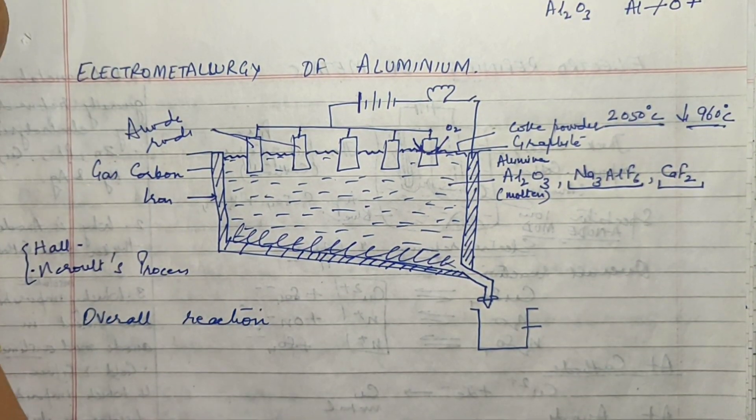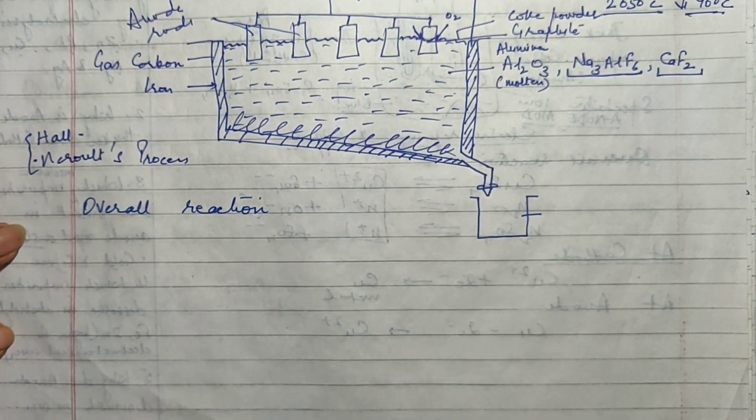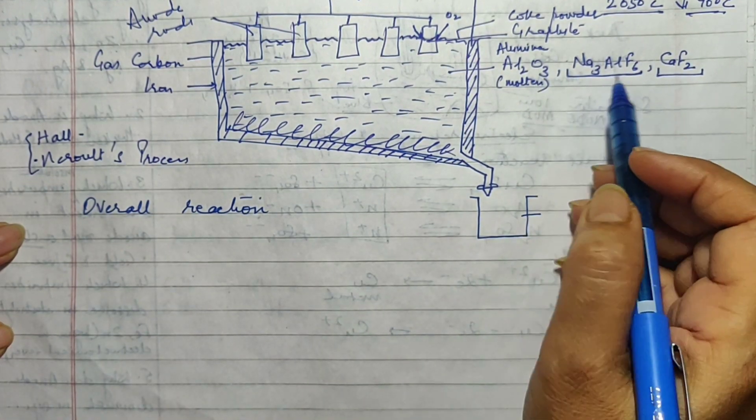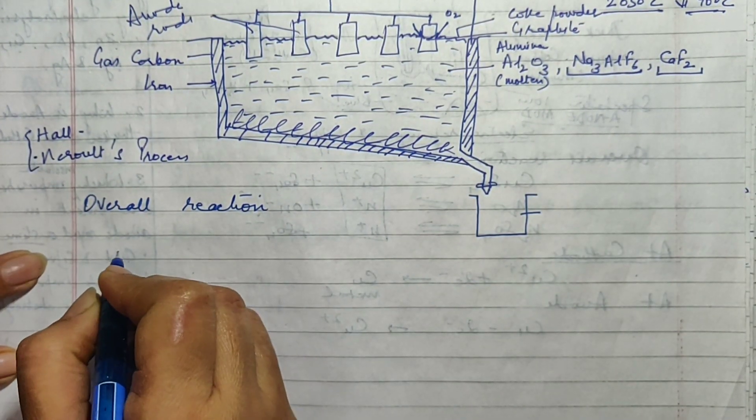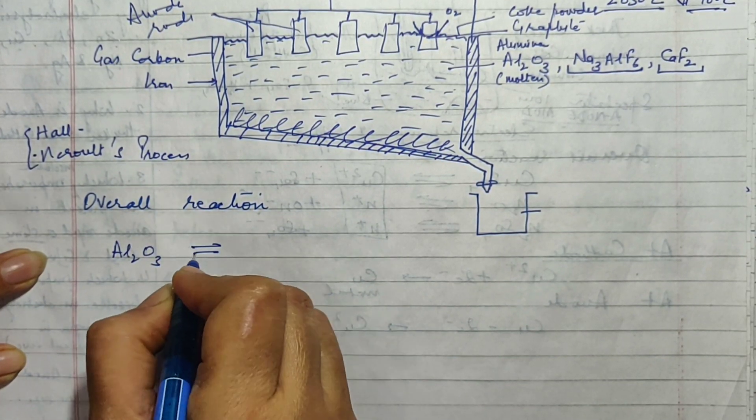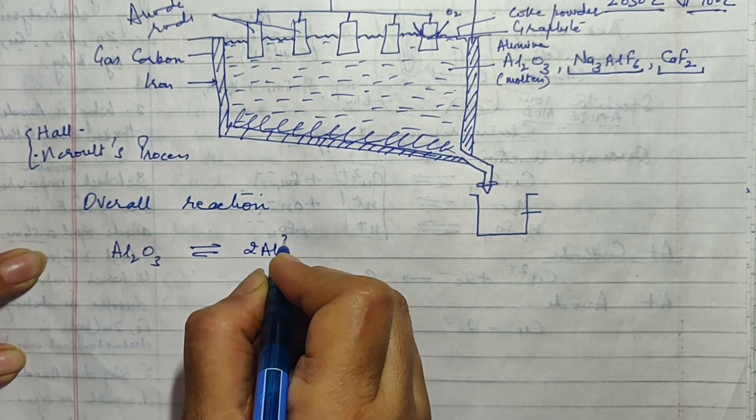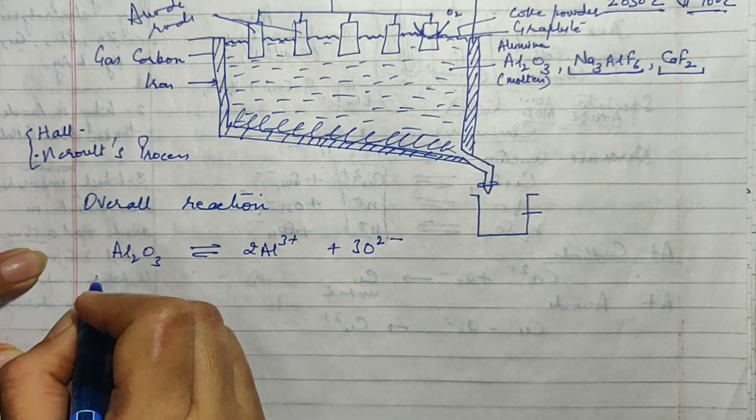Now what is the overall reaction? Now so far I think you all understood how do we write the overall reaction. Whatever is present in the electrolyte everything is going to be dissociated. Let's begin with alumina Al2O3. This one is going to dissociate into aluminium ions and oxygen ions.